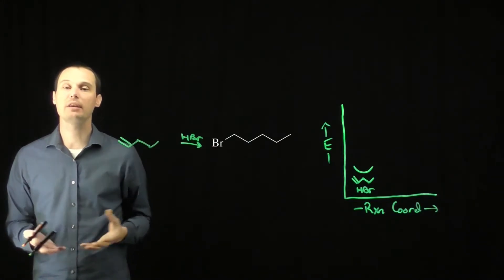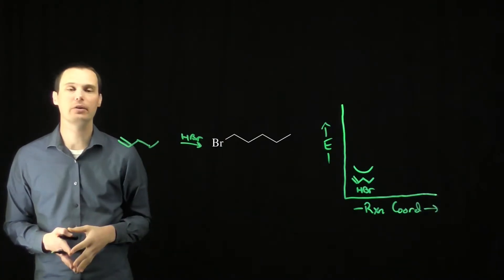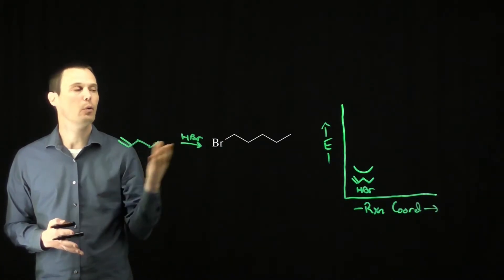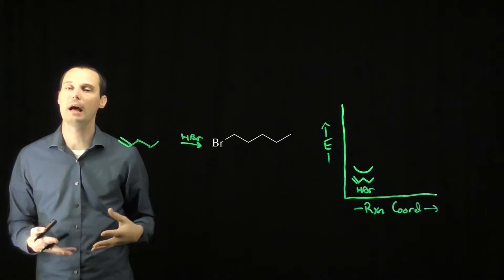This would have to be the alkene that we were starting with in order to form this alkyl halide product. Let's take a look and figure out why the primary alkyl halide will not be the major product.